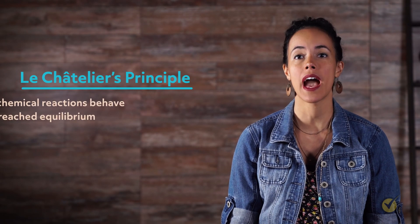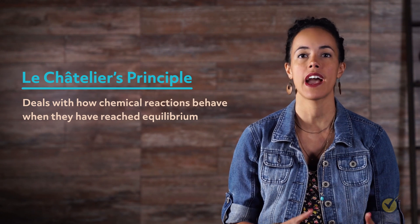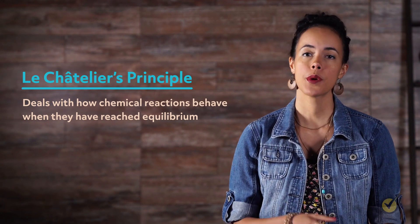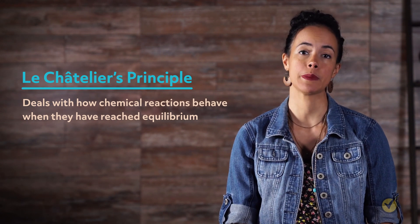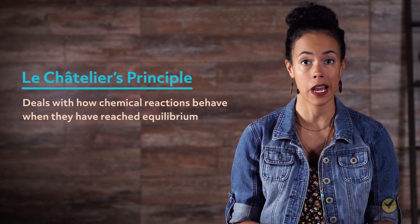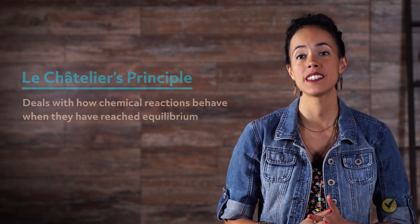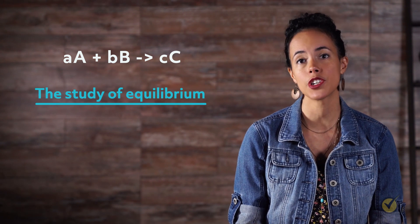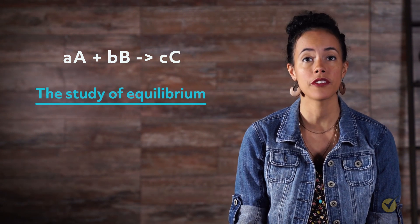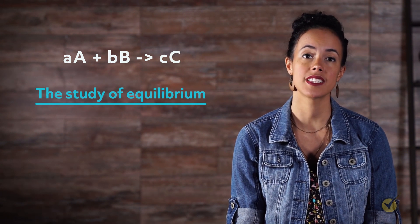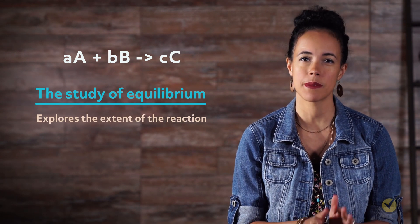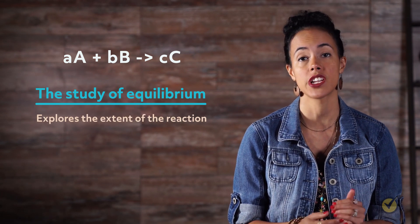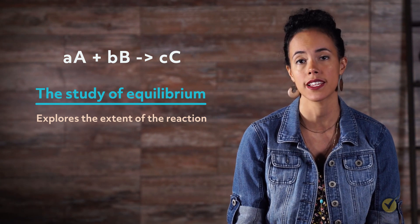Le Chatelier's Principle deals with how chemical reactions behave when they have reached equilibrium. Before we dive into Le Chatelier's Principle, let's review what we mean by equilibrium. Consider a simple chemical reaction where A moles of A and B moles of B react to form C moles of C. The study of equilibrium is concerned with how much of A and B will be converted to C — in other words, the extent of the reaction. It's important to keep this concept separate from how fast the reaction happens, which is the study of kinetics.